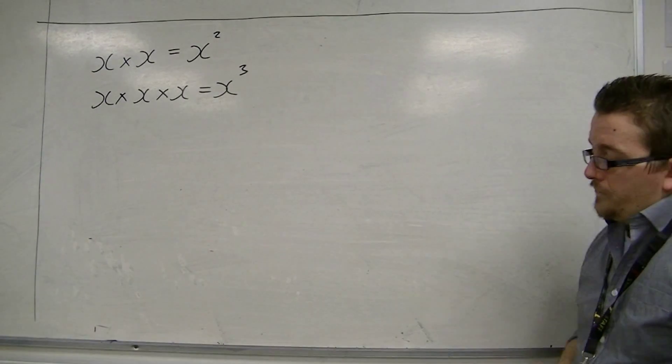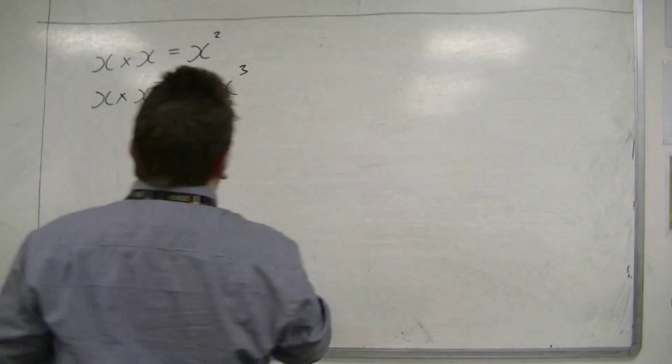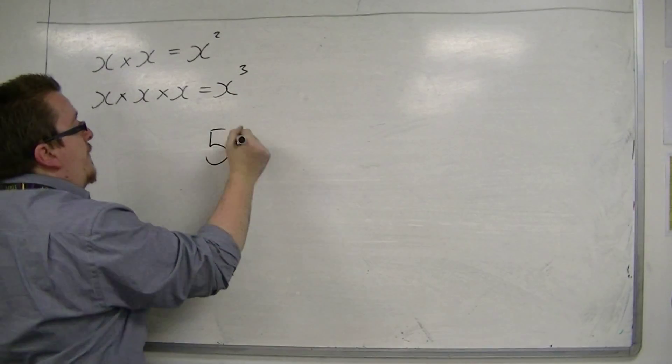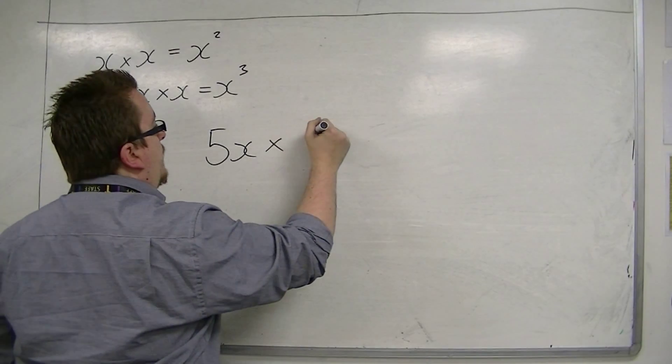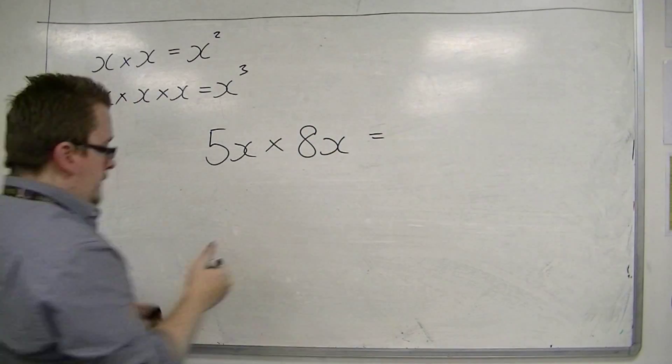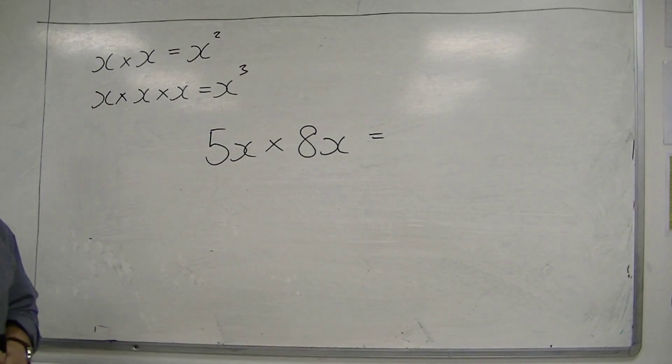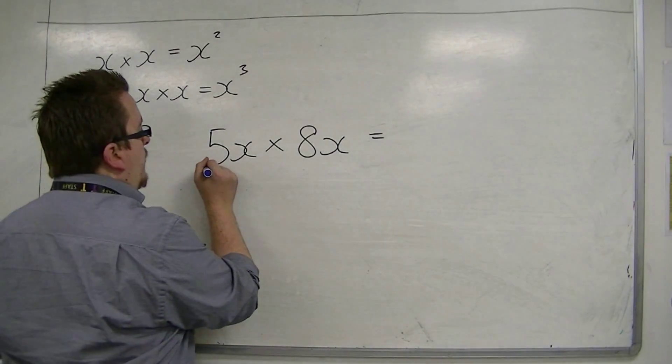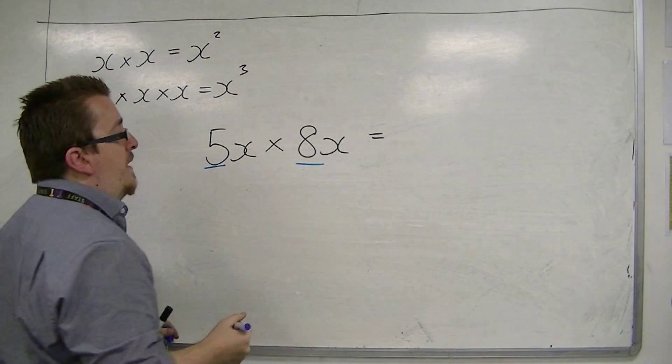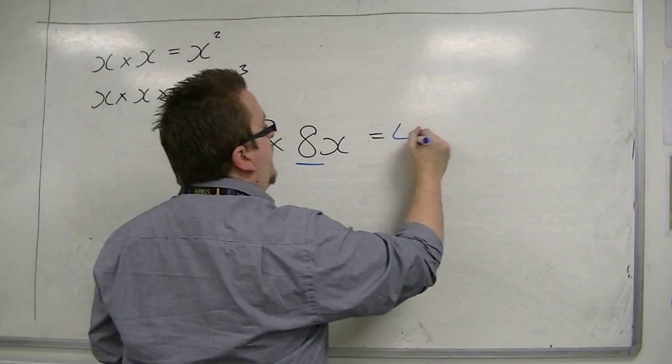So that if you had something like 5x times 8x, then we're going to deal with it in very much the same way as before. So we're going to start with multiplying the 5 by the 8. 5 times 8 is 40.